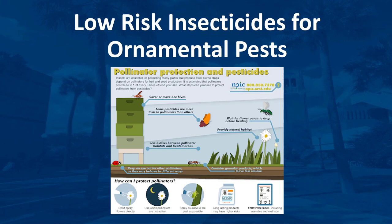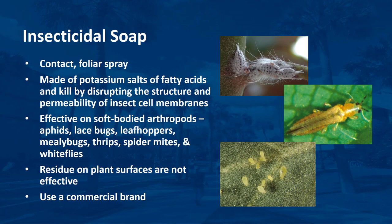I'm Dr. DeBusk, and this video goes over the types of products that have a minimal impact on beneficial insects, such as pollinators, while still being able to control ornamental pests. Insecticidal soaps are applied as a foliar application and are effective on a wide range of plant pests when the soap spray comes into contact with the pest.